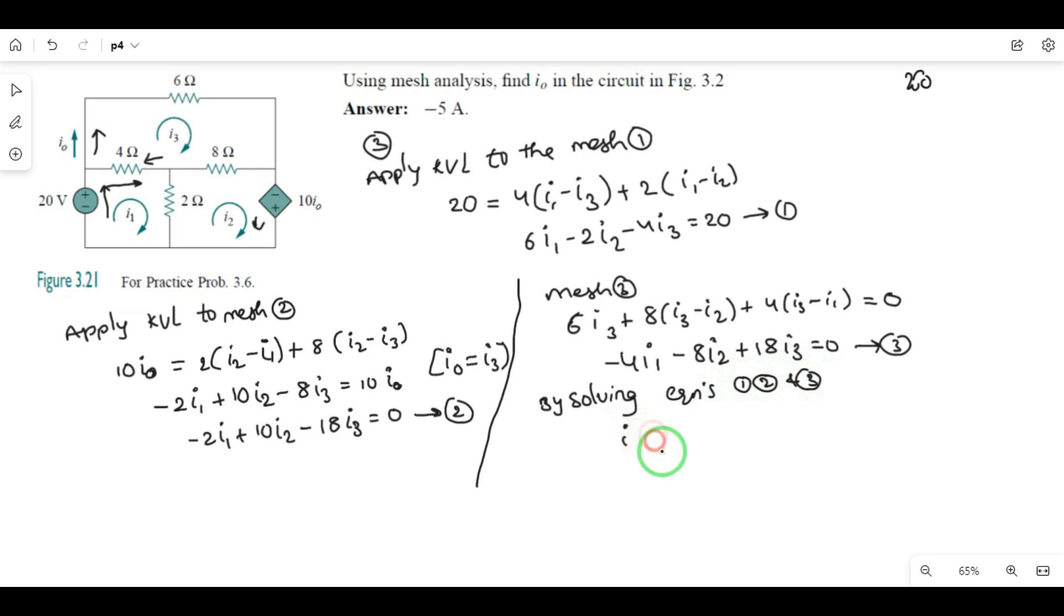By calculation, you will get i1 equals minus 3.2, i2 equals minus 9.6, and i3 equals minus 5. These are the mesh currents. The question asks to find i0. i0 is equal to i3, which we already determined. i3 is minus 5, so the answer is i0 equals minus 5 amperes.